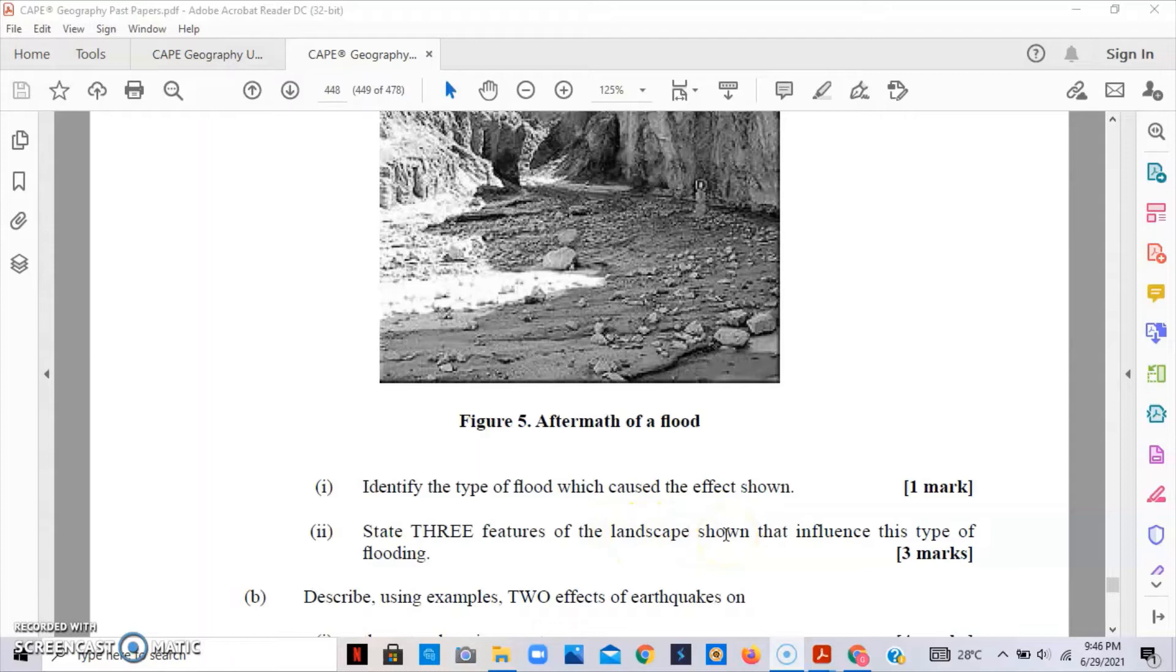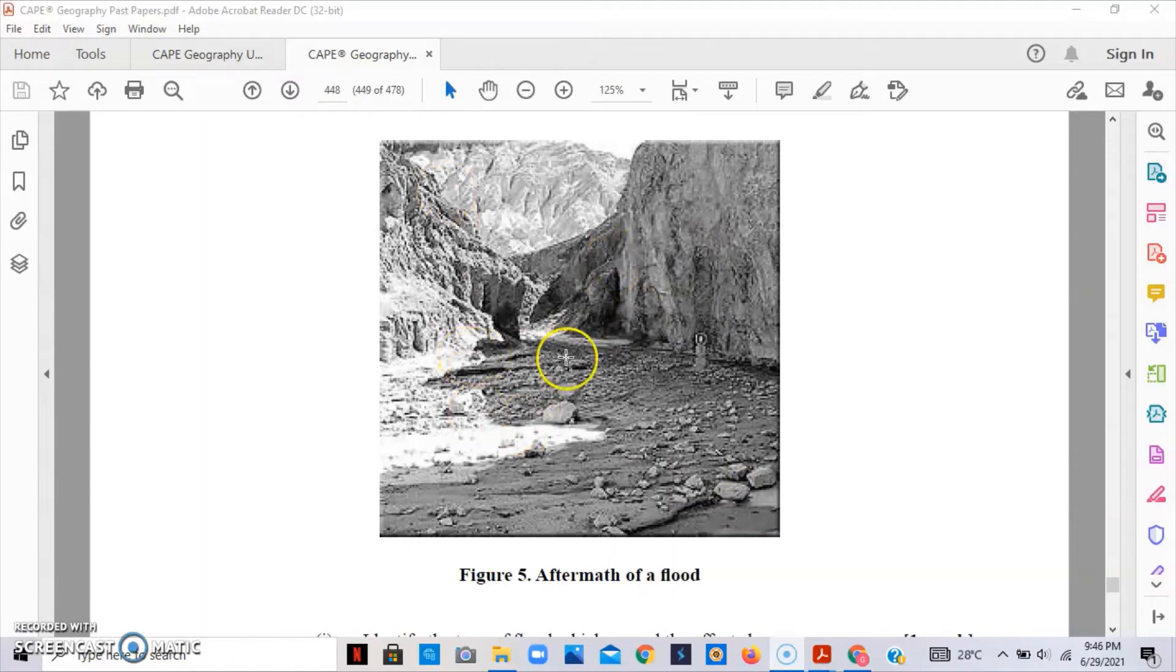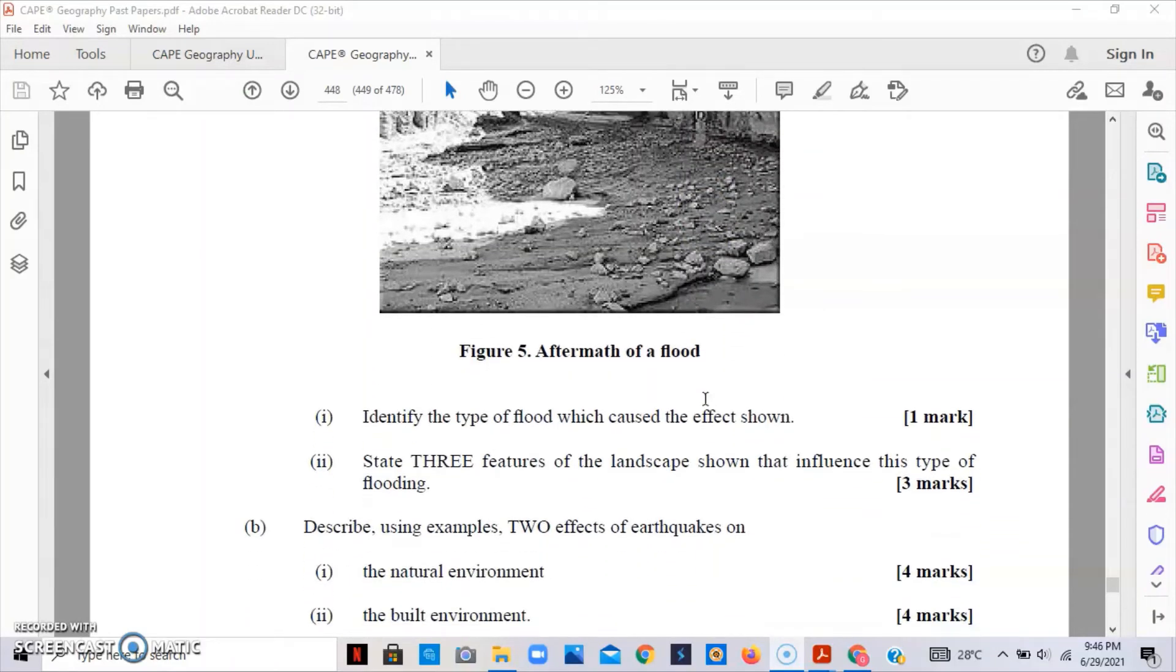Part two asks to state three features of the landscape shown that influence this type of flooding. Some of the features you can list: there is a very deep narrow valley, you can see very steep slopes, there's an absence of vegetation, and it has a funnel shape. If you're able to list any three, you should be able to receive your marks.